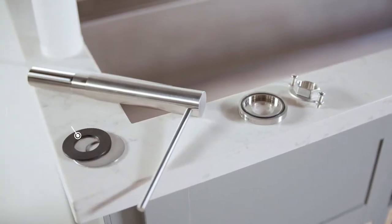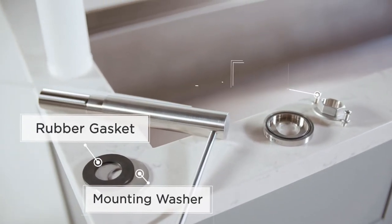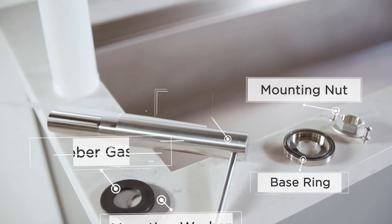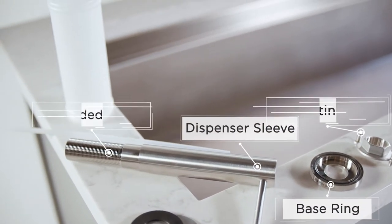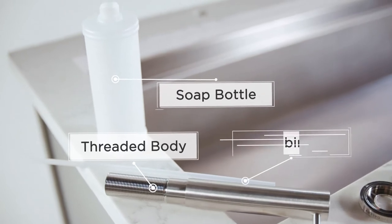The contents include rubber gasket, mounting washer, mounting nut, base ring, dispenser sleeve, threaded body, soap bottle, and tubing.